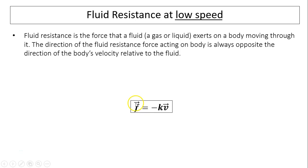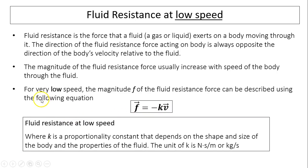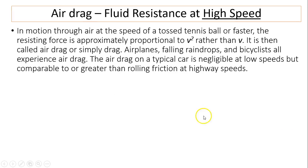This is a vector quantity, so the direction of F is always opposite of the body's velocity. The magnitude F equals k times V. The magnitude of fluid resistance usually increases with speed; in this case it is directly proportional. For very low speed, the fluid resistance force can be described by f = kV. Here k is a constant that depends on the shape and size of the body and the properties of the fluid. The unit for k can be Newton·seconds per meter, or kilograms per second.